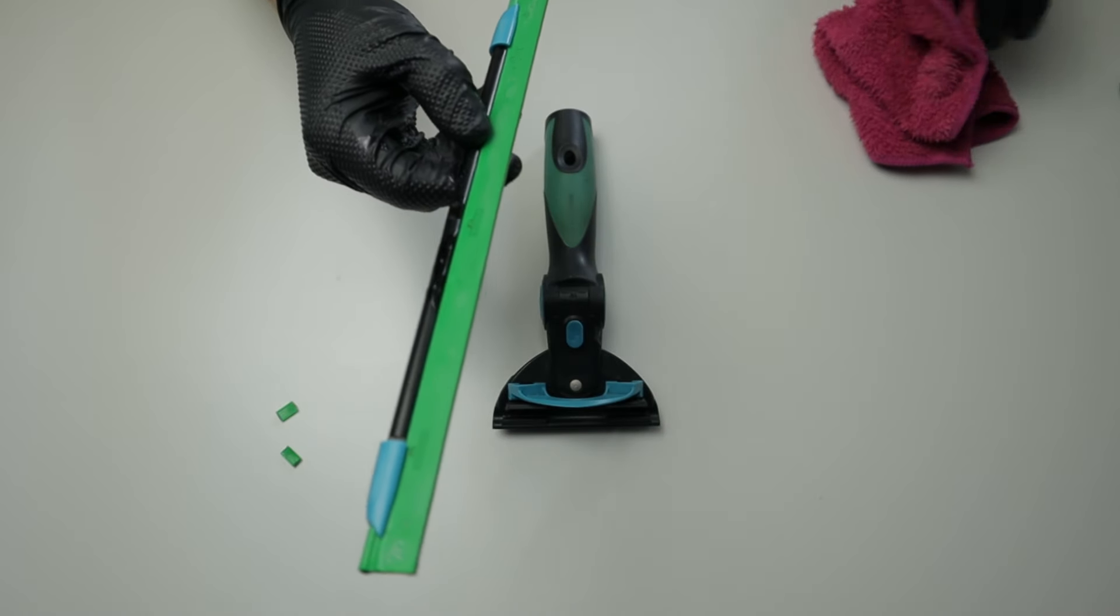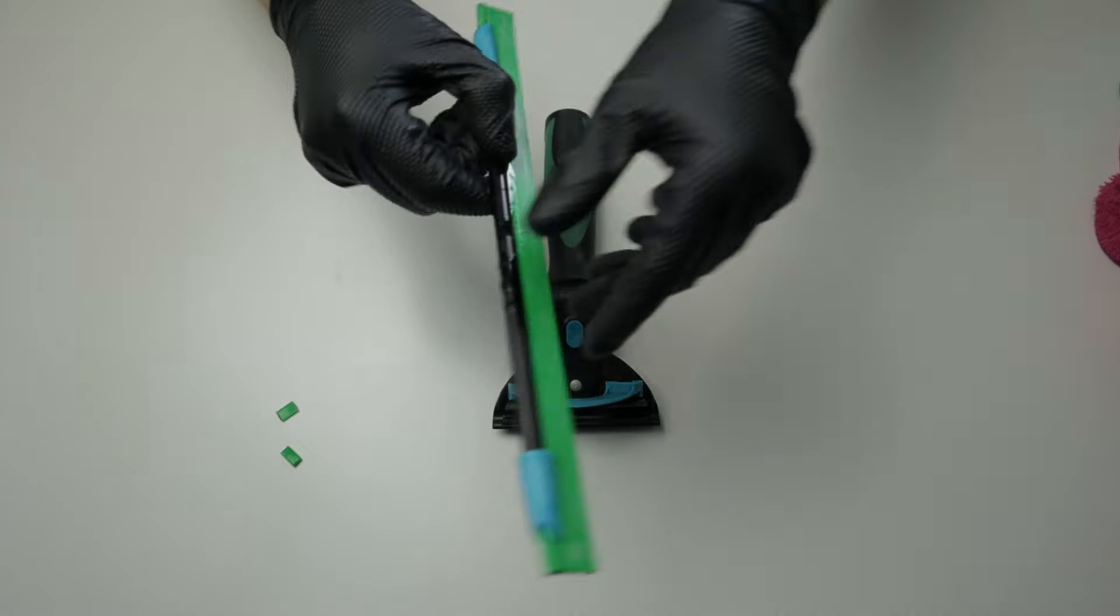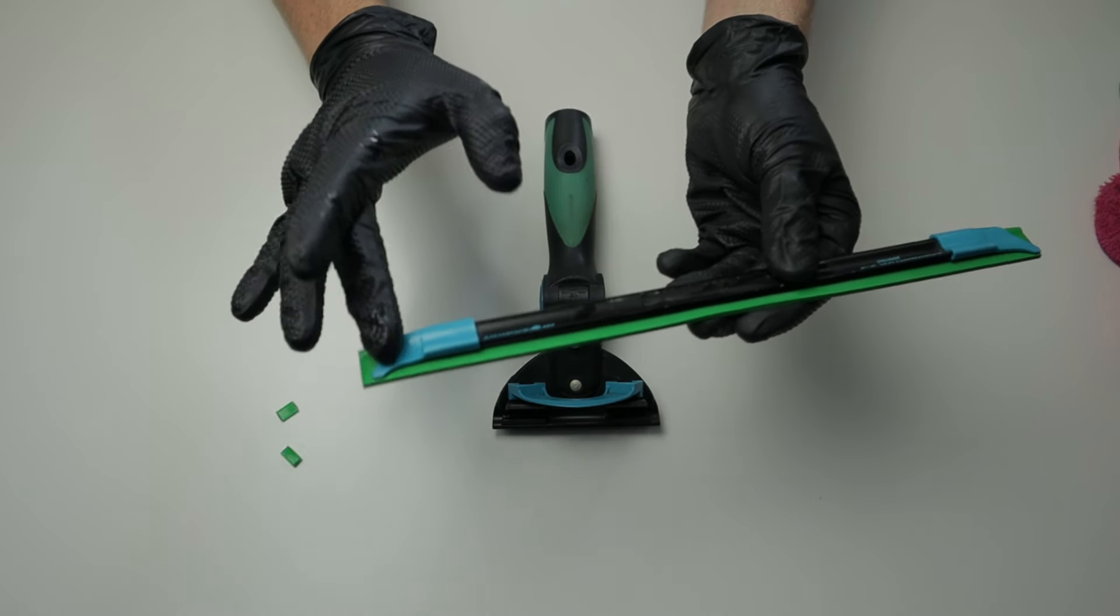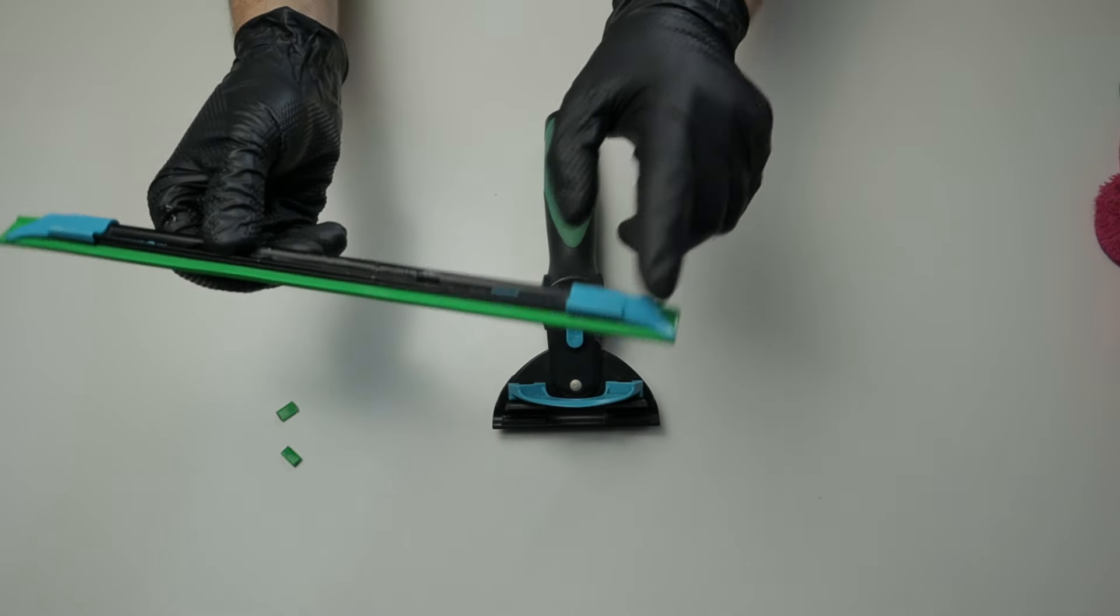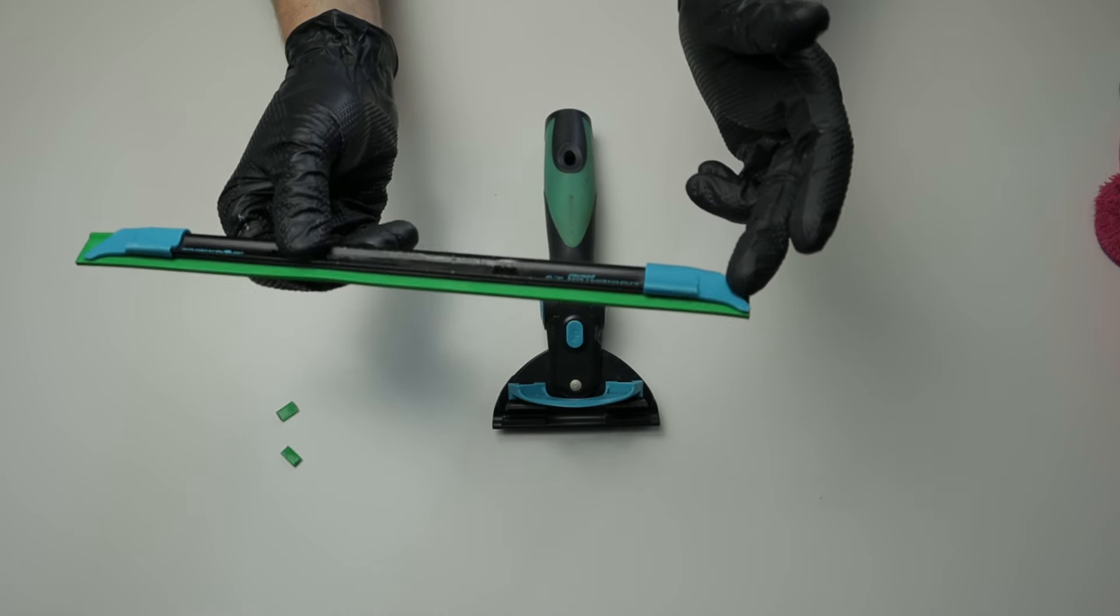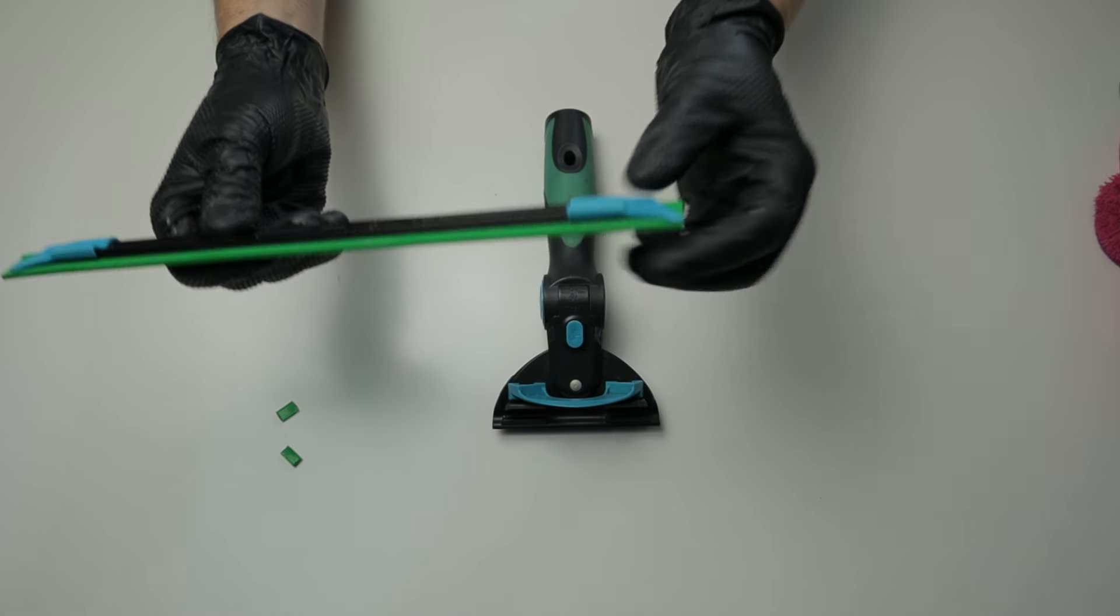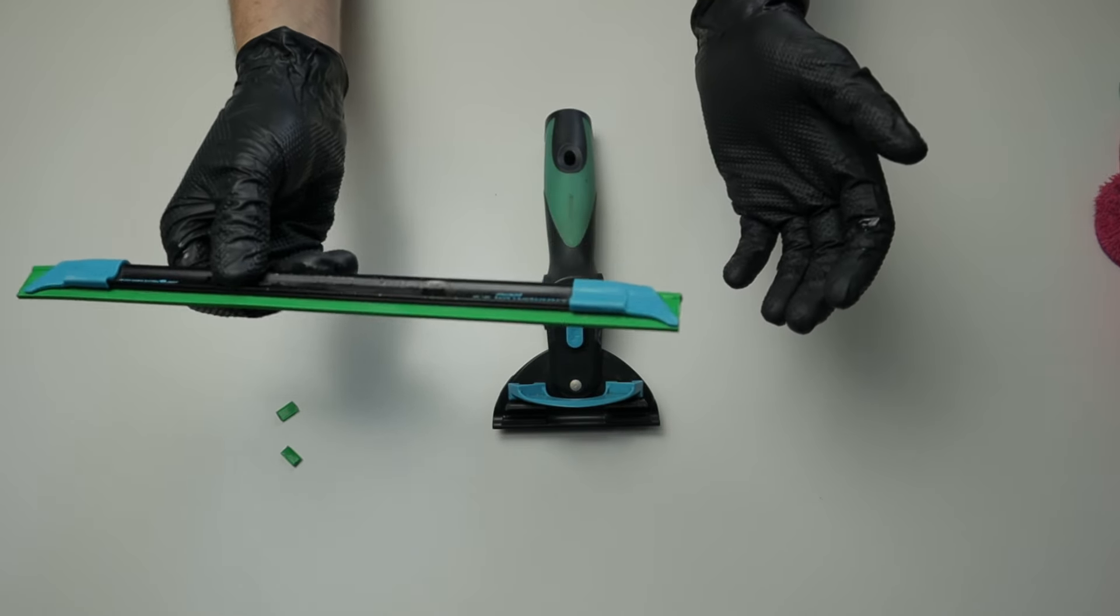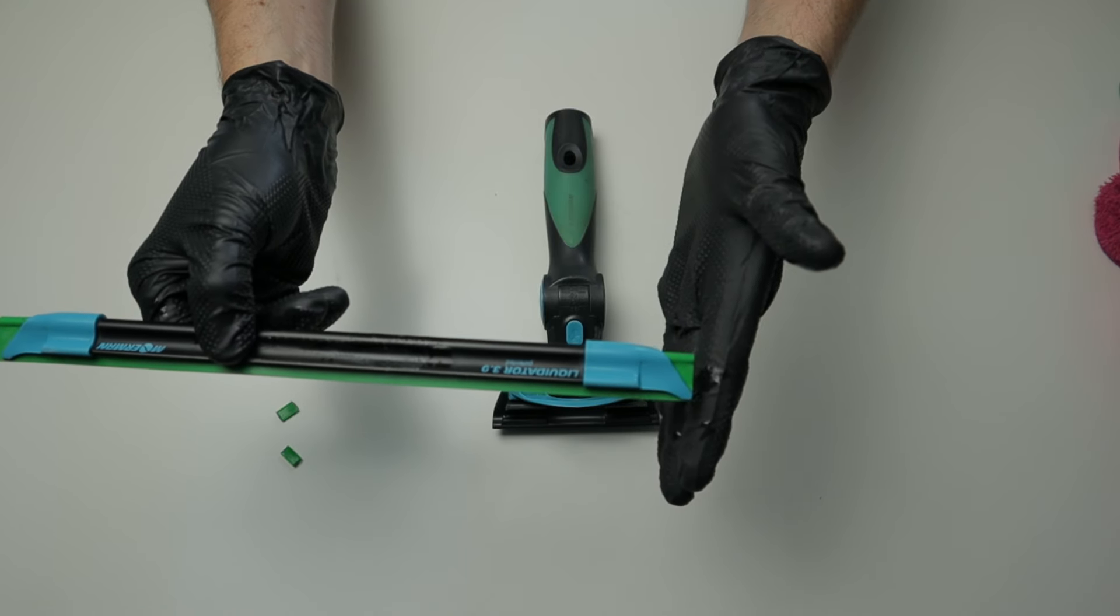Now, the difference between this squeegee and the other one is because this has plastic clips on the end. This is what's going to protect your customer's frames. Because it's not metal and it's plastic, these clips actually work best when the rubber is flush at the ends.